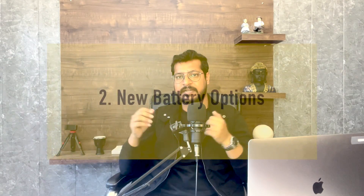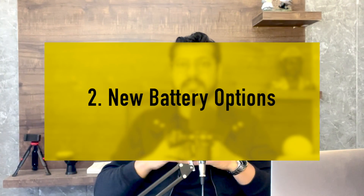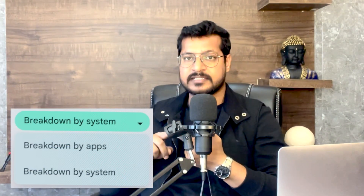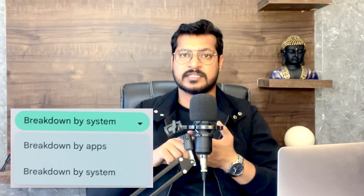The second option I have seen is changes in the battery functions. Google keeps on optimizing the battery so that users have more control. There are two things I have seen: one is we can get a breakdown of the battery by applications or by systems, so we can better see how the battery is getting consumed.